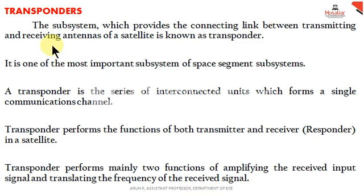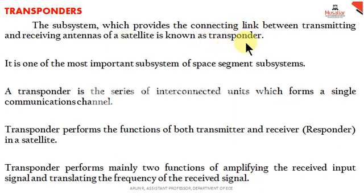In this video, I would like to continue our topic on satellite subsystems. One of the important elements is the transponder. Transponder means it is a subsystem included in a satellite communication system that can provide a connecting link between the transmitting and receiving antennas of a satellite. That connecting link is known as a transponder, and it is one of the most important subsystems among the space segment subsystems.